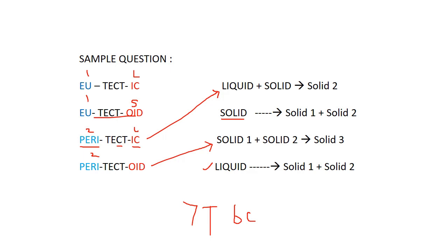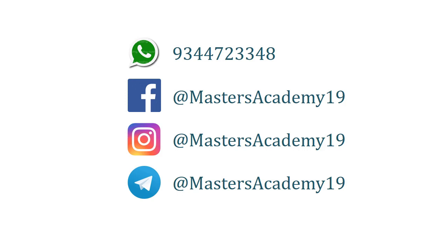Peritectoid sounds 'peri' — two phases — and 'oid' means both are solids, with no liquid present. This gives a clear mapping for all four reactions. In this way we can easily identify the four types of reactions that generally occur in phase diagrams. In upcoming videos, I will connect 7T with 6C as a relationship to frame the iron carbide diagram. Thank you so much for watching — keep supporting us!